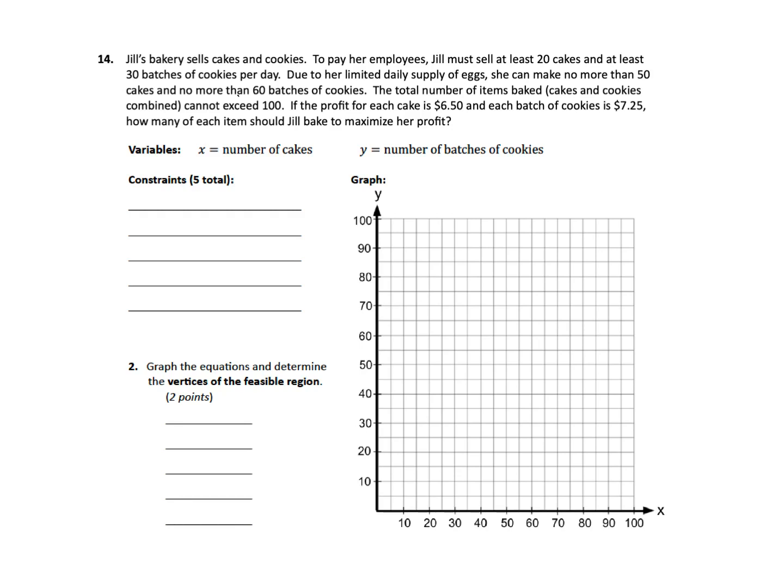In this video, we'll look at number 14, which is a linear programming word problem. Jill's bakery sells cakes and cookies. To pay her employees, Jill must sell at least 20 cakes and at least 30 batches of cookies per day. Due to her limited daily supply of eggs, she can make no more than 50 cakes and no more than 60 batches of cookies. The total number of items baked, cakes and cookies combined, cannot exceed 100. If the profit for each cake is $6.50 and each batch of cookies is $7.25, how many of each item should Jill bake to maximize her profit?